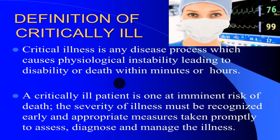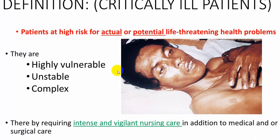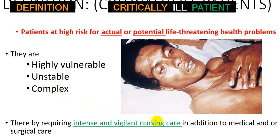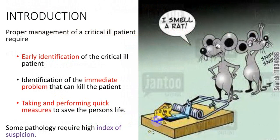If you suspect then only will you be able to pick up those people. For suspicion you require certain clinical clues. The patient is at high risk for actual or potential life-threatening conditions — highly vulnerable, unstable, having a complex group of symptoms and signs, requiring intense and vigilant nursing care to reduce mortality and morbidity. These are called critically ill patients. So early identification is key — if not identified, you can kill the patient. You require performing quick measures and for that an index of suspicion.